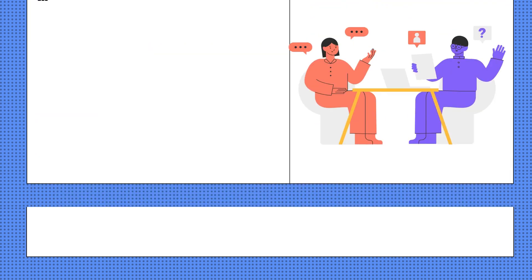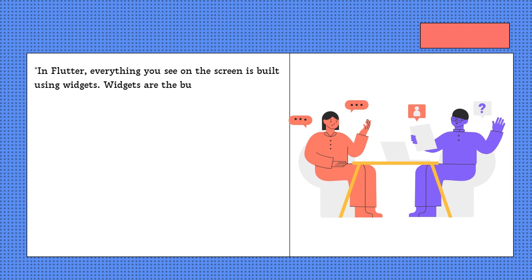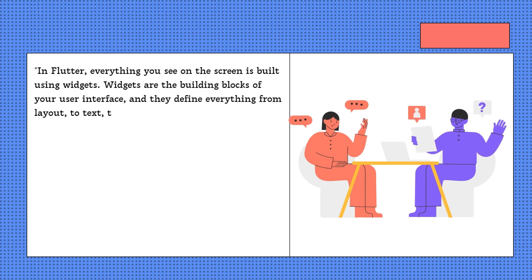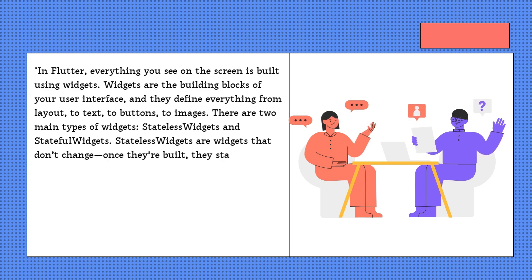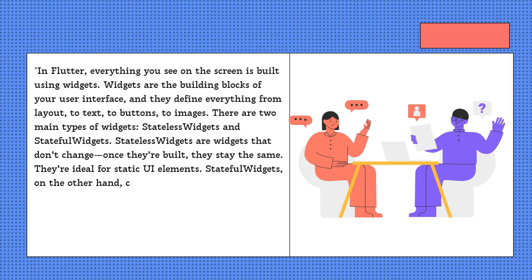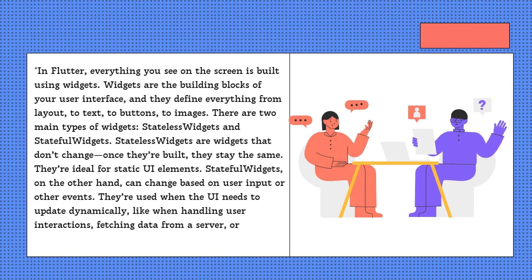In Flutter, everything you see on the screen is built using widgets. Widgets are the building blocks of your user interface, and they define everything from layout to text to buttons to images. There are two main types of widgets: stateless widgets and stateful widgets. Stateless widgets don't change once they're built — they're ideal for static UI elements. Stateful widgets, on the other hand, can change based on user input or other events. They're used when the UI needs to update dynamically, like when handling user interactions, fetching data from a server, or managing animations.